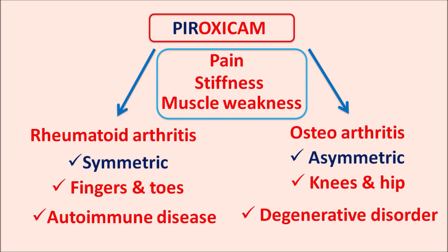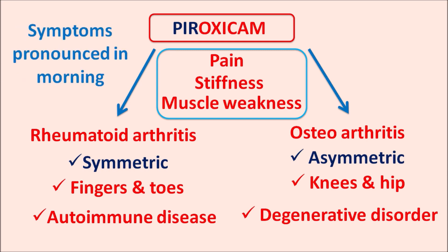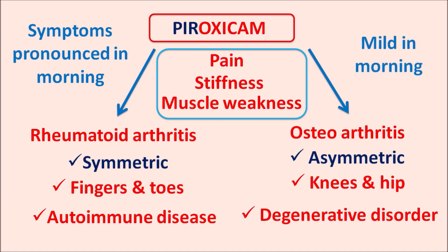The onset of symptoms differs between these two conditions. In rheumatoid arthritis, symptoms are more pronounced during the morning, whereas in osteoarthritis symptoms are mild in the morning and more pronounced at the end of the day. Despite their differences, both conditions cause joint pain and stiffness, so pyroxicam can be used to control pain as well as joint stiffness in both rheumatoid arthritis and osteoarthritis.